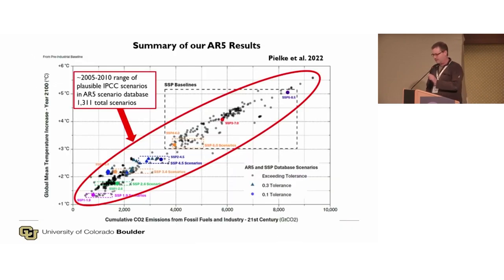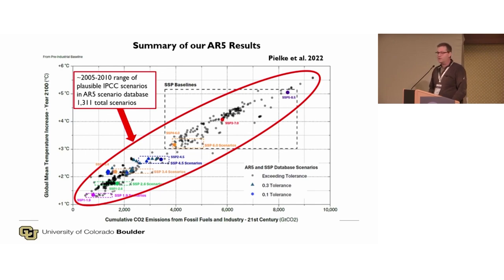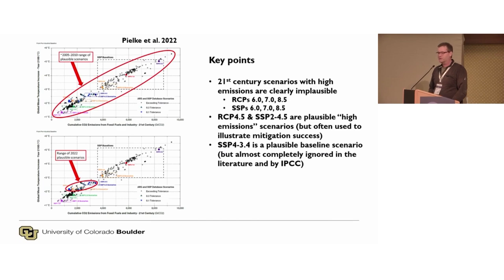This is one of my favorite figures I've had a chance to develop. It shows all of the AR5 scenarios — 1,300-plus. They're arrayed based on temperature change on the vertical axis in 2100 and cumulative CO2 emissions on the horizontal axis, with a red oval around the entire set of plausible scenarios that AR5 had in its database. How do we know IPCC considered them plausible? They put them in the database — by definition. After we apply our screen, the bottom figure shows the scenarios that survive screening.